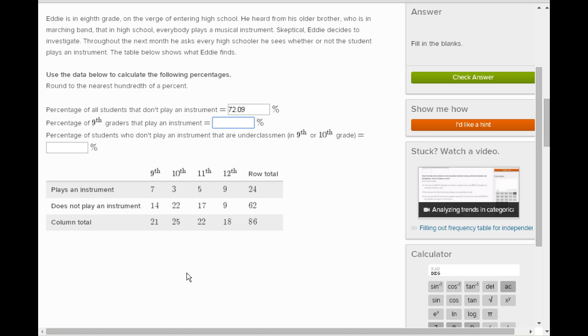And that answer is 33.33 percent. Then the percentage of students who don't play an instrument that are underclassmen. So out of the students who don't play an instrument, how many of them are underclassmen? We consider them the ninth and tenth graders. Well, ninth and tenth graders, there are 36 in here out of the 62, so it's 36 over 62.